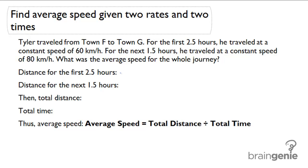The total distance for the first 2.5 hours is going to be 2.5 times 60 equals 150 kilometers. The distance for the next 1.5 hours is 1.5 times 80 equals 120 kilometers.